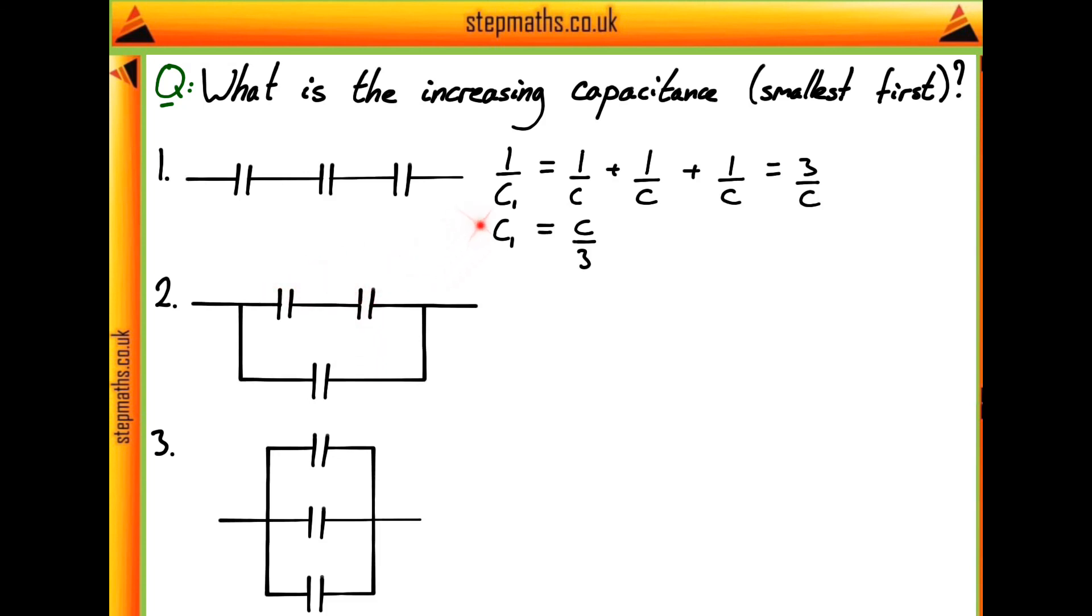So using the law that we just used to add up our three capacitors in series, we can do the same thing for our two capacitors in series here, and it's just going to give us this final capacitance of this section being C over two, which you can probably see by looking at this bit from the previous part.